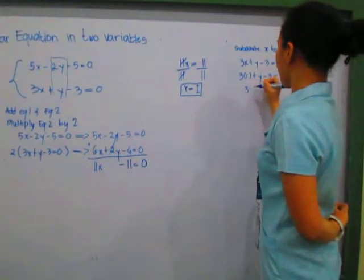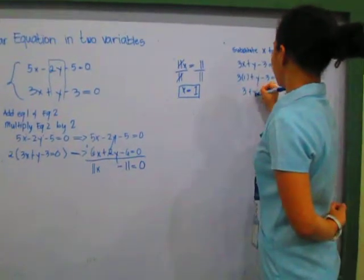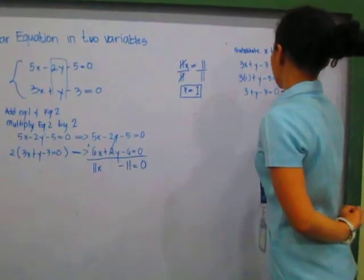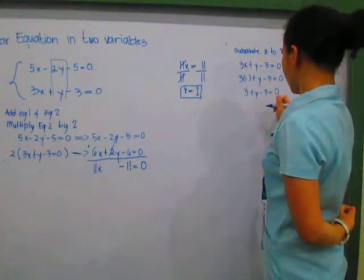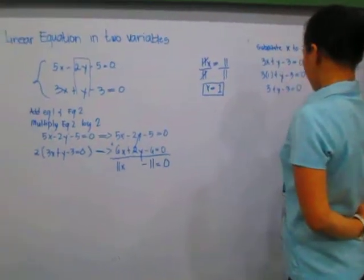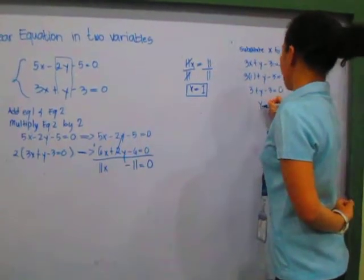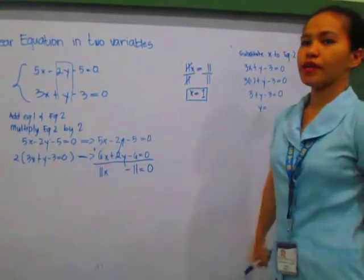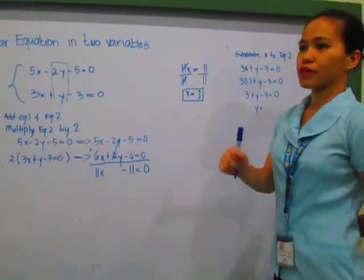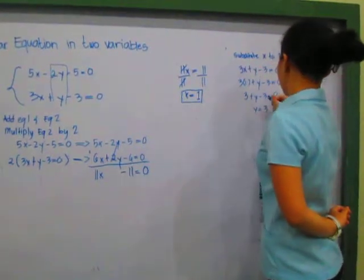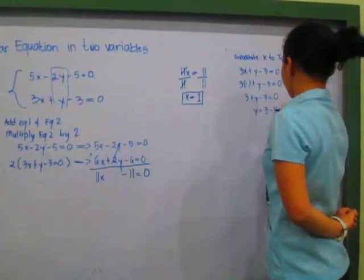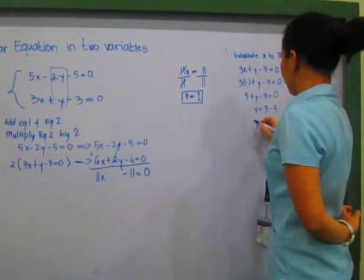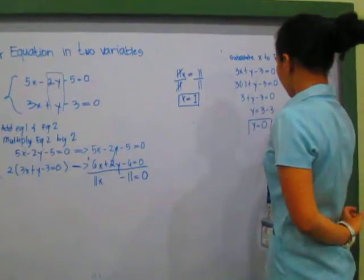3 times 1 equals 3 plus y minus 3 equals 0. We have to transpose it to get the value of y. Y is equal to—as I've said earlier, as you transpose the sign will automatically change—3 minus 3. Y is equal to 0. We have our value of y.